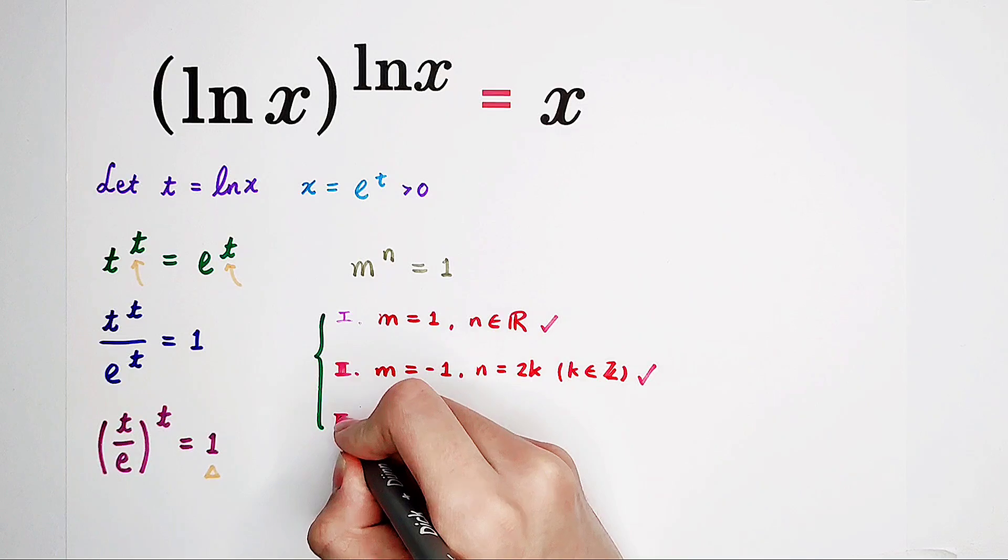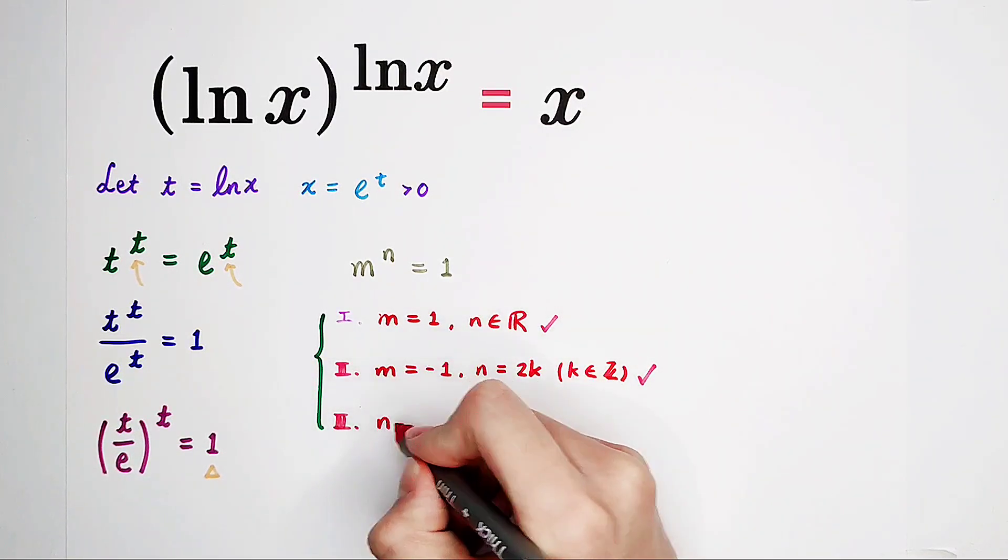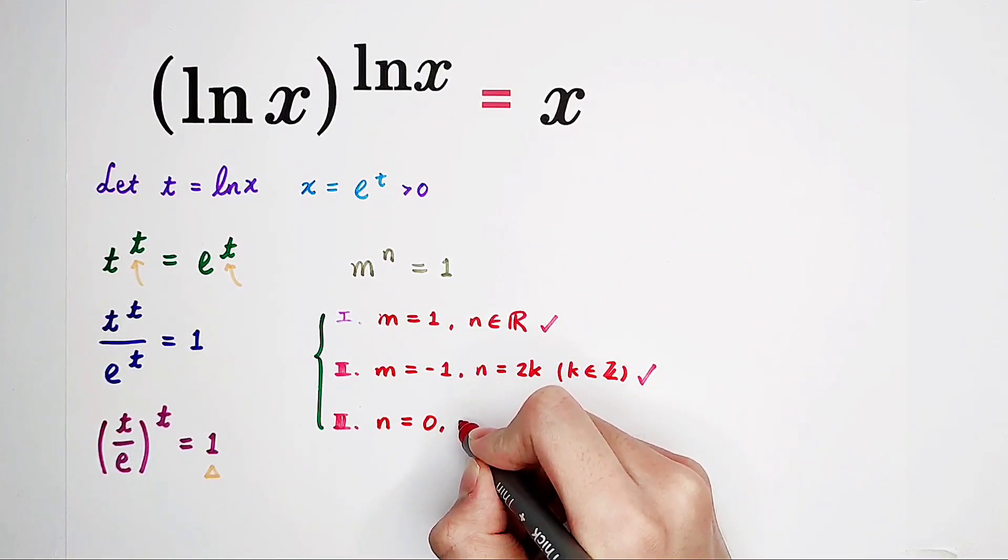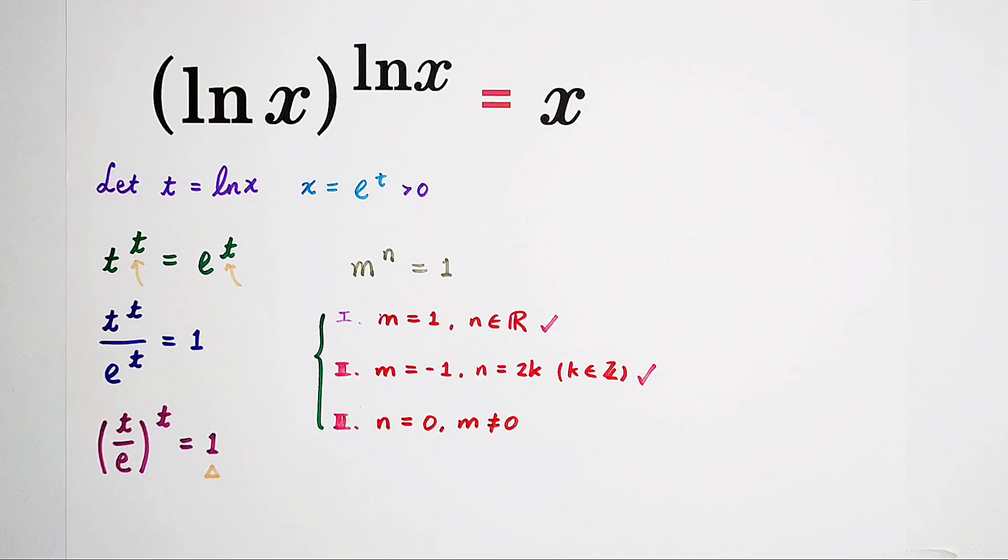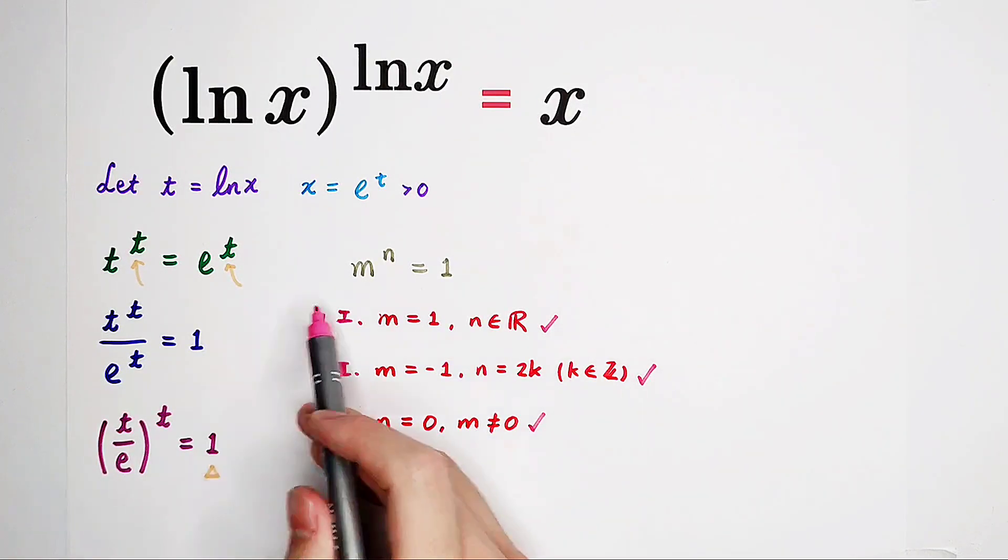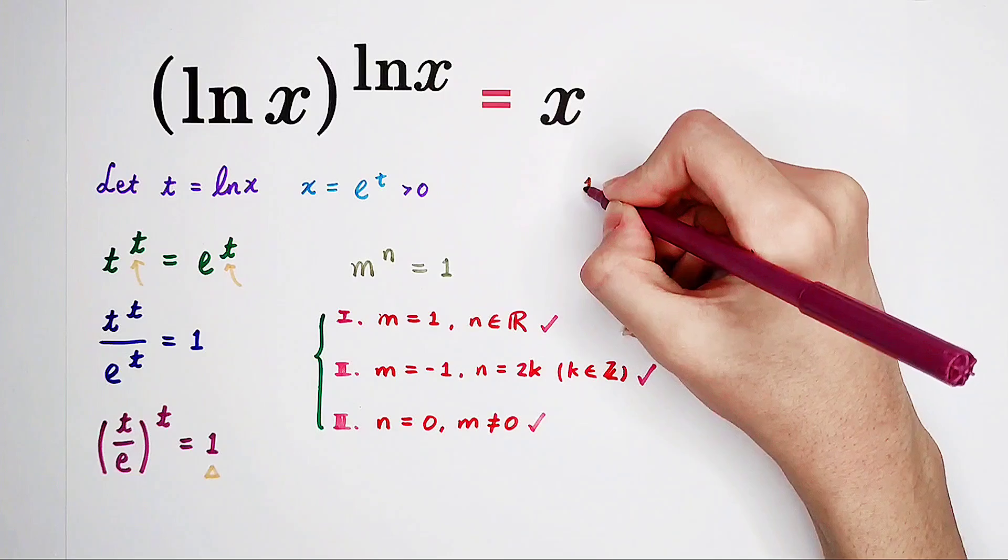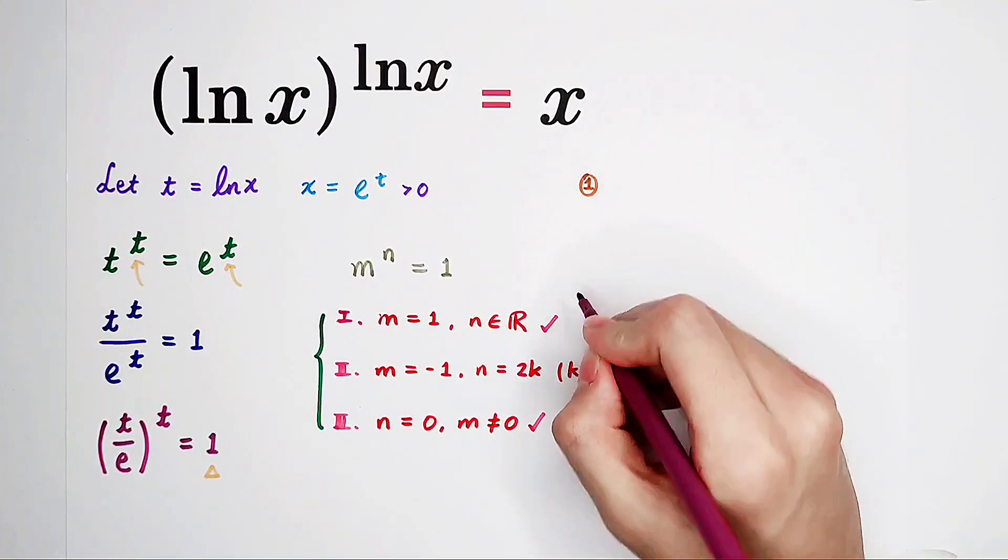The third case: if our exponent n is 0, however, under one condition, m is not equal to 0, then this equation will also have a solution. Just like this kind of equation, our equation can also be examined like this. The first case, the second case, and the third case.